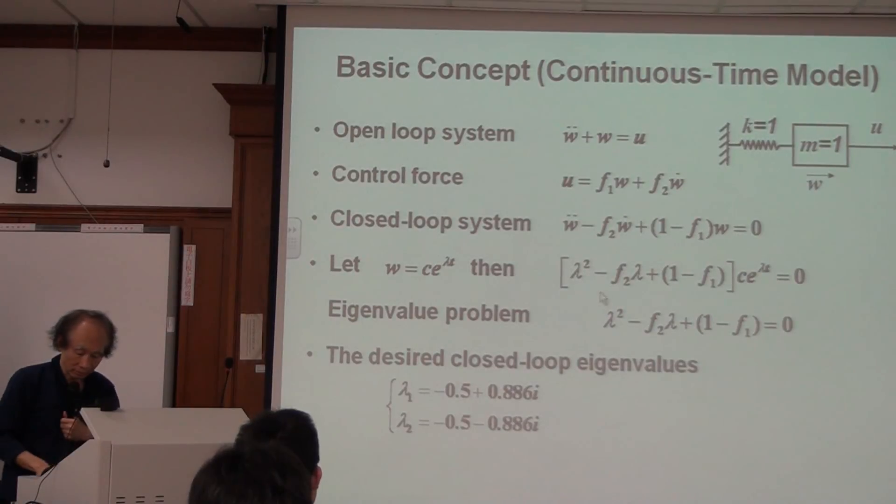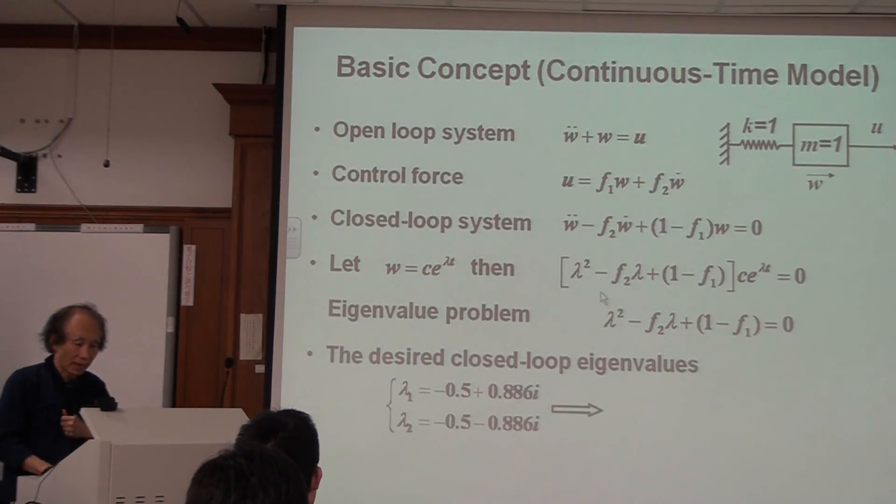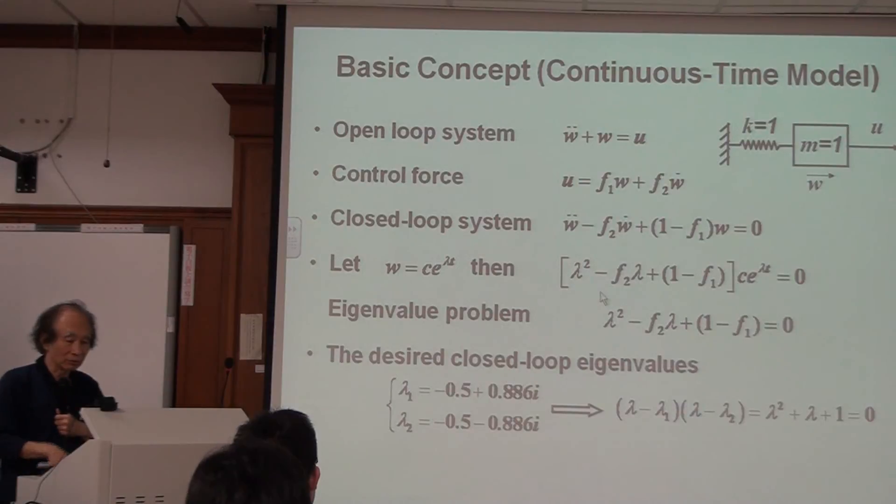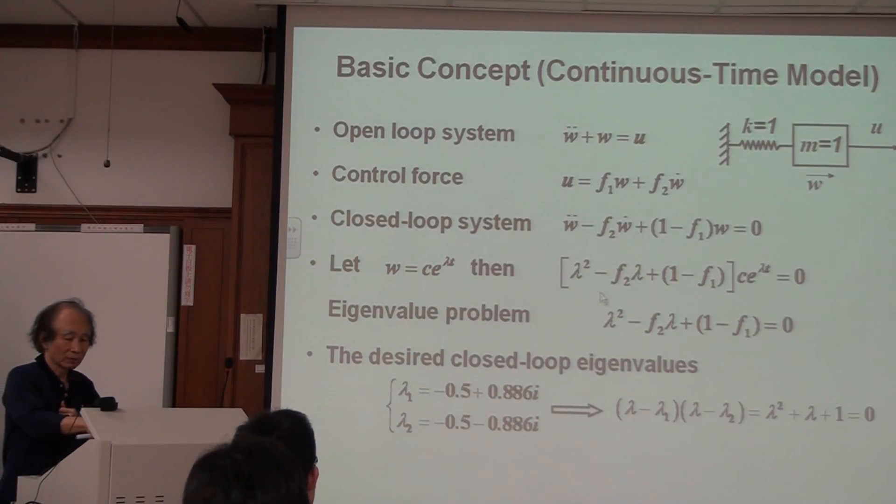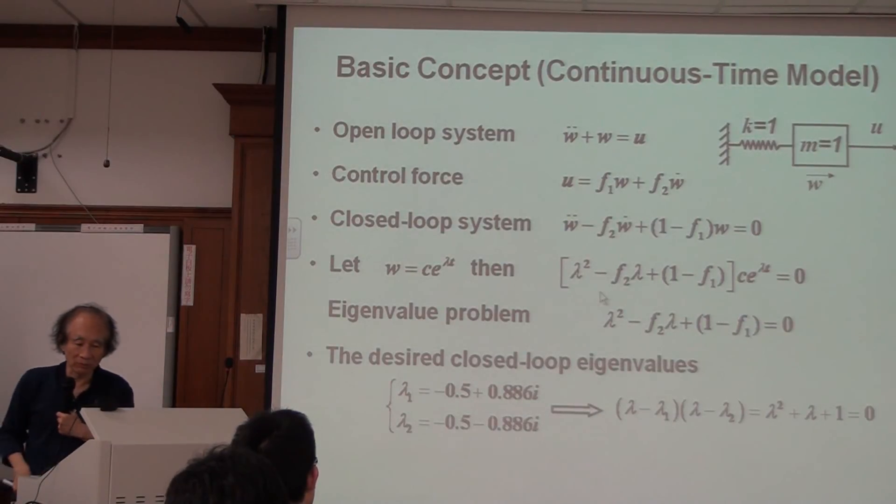Okay, now let us continue. If I know my lambda 1, lambda 2, so lambda equal lambda 1, lambda equal lambda 2, so that's my eigenvalue problem. If I know the closed-loop eigenvalue, that equation I'm supposed to have. And that's my desired closed-loop eigenvalue.